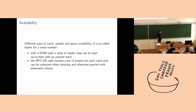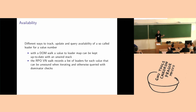There are different ways to track and query availability. For example, the dominator optimization pass keeps a map from the value to the SSA name where the SSA name is available during the dominator walk. When unwinding from the dominator walk, it uses an undo stack to restore the availability state.